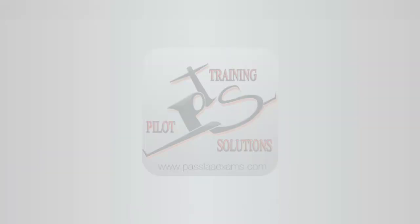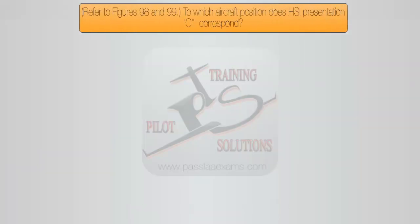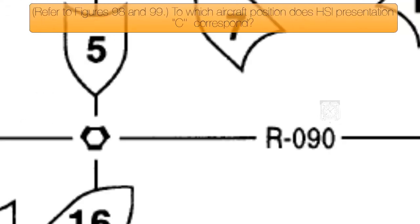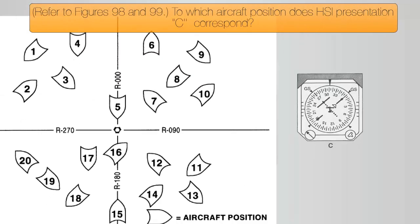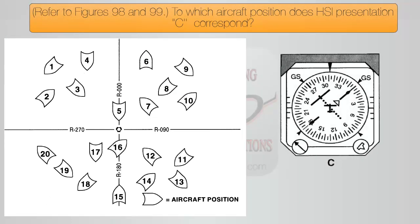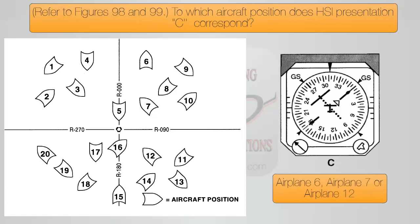As promised, let's move to an instrument question. This question says: refer to figure 98 and 99 — to which aircraft position does HSI representation C correspond? The possible answers are Airplane 6, Airplane 7, or Airplane 12.